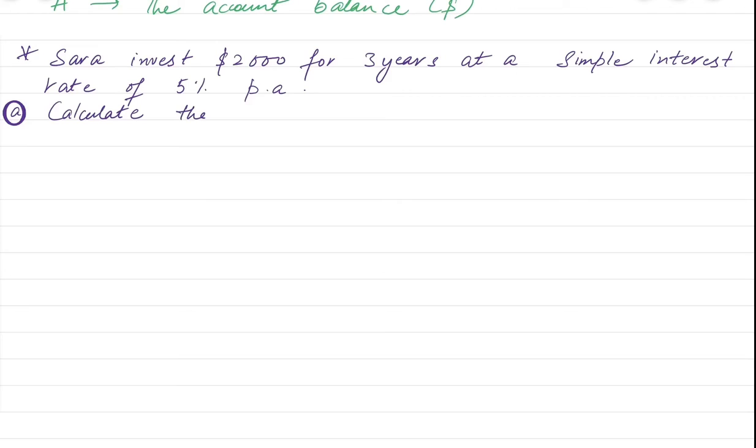So per annum is given to us. Suppose we have to calculate the interest earned. Now how we can calculate the interest earned? The capital I, we need to find small n, which is 3 years given to us.